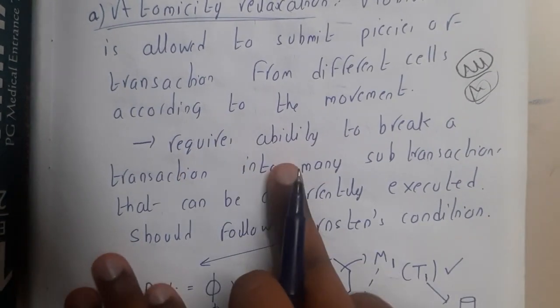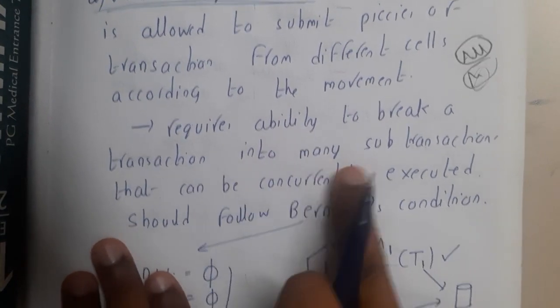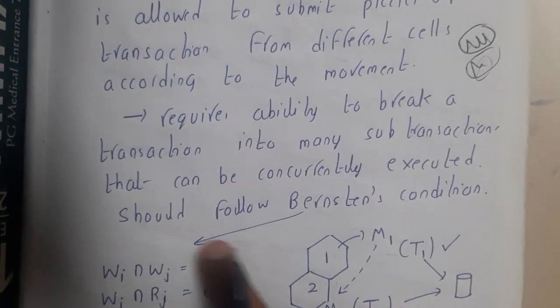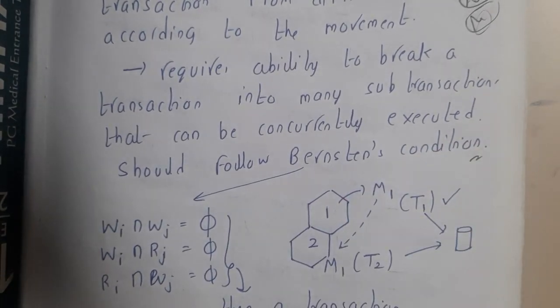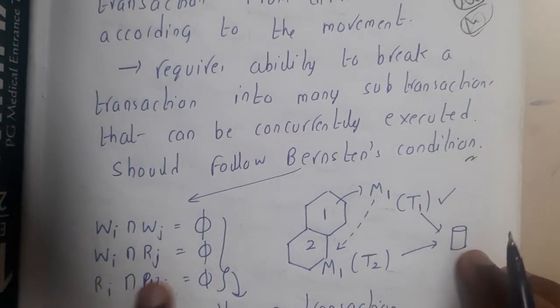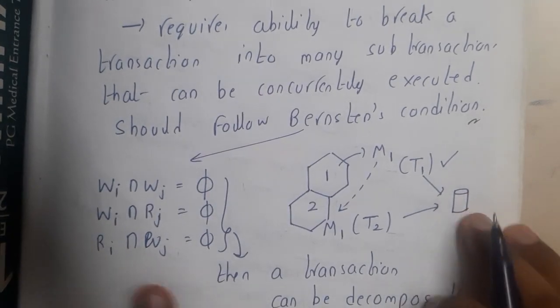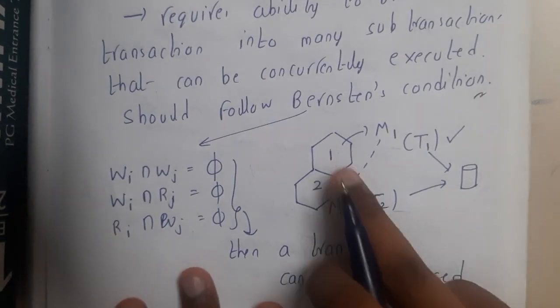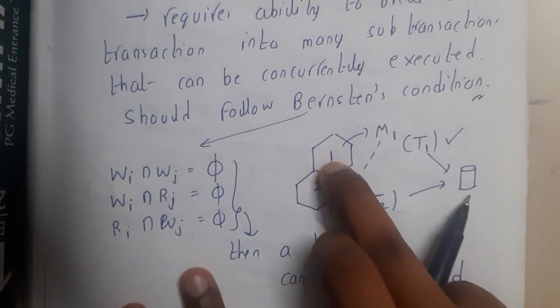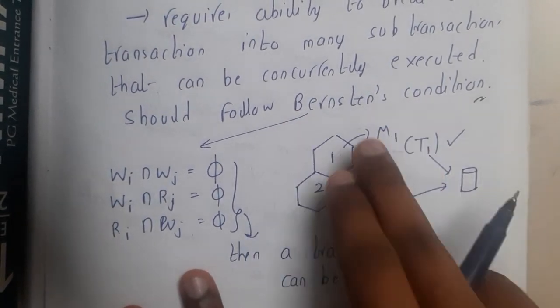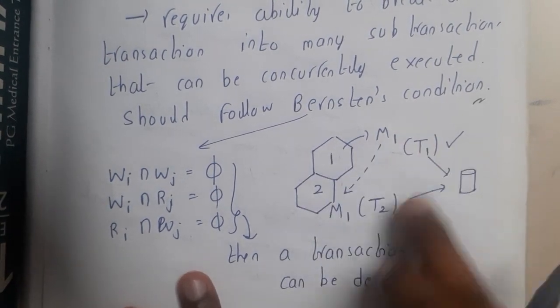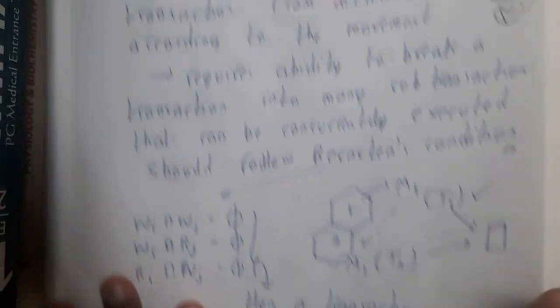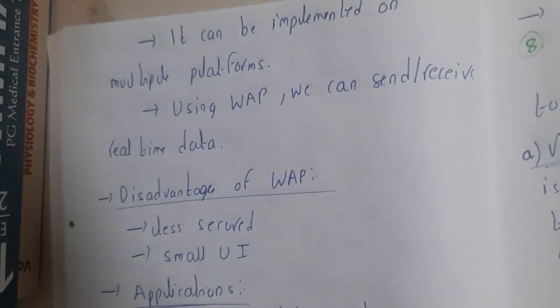It requires ability to break a transaction into multiple sub-transactions that can be concurrently executed. Should follow Bernstein's condition - write-write conflicts should not be there and read-write conflicts should also not be there. Basically, read-read conflicts could be there. If you have two transactions T1 and T2, from cell area one you will be sending that transaction and from area two you will be sending this transaction.